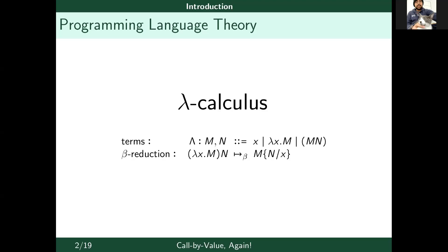But not all terms reach normal forms. Some of them have infinite reduction, but they are still not meaningless because we can have programs leading to infinite reduction while still producing new data and still having meaning. So for those terms without normal forms, we still want to understand them and their behavior, and for that there is a huge need for approximation.